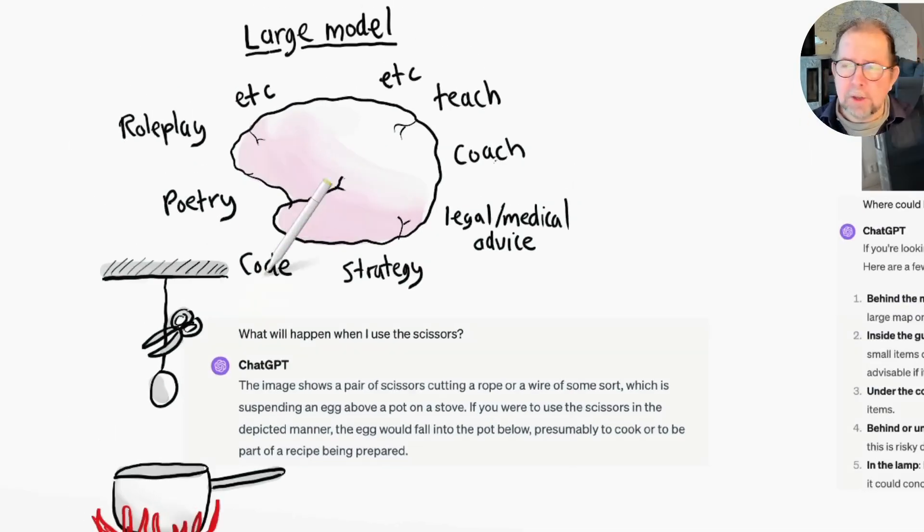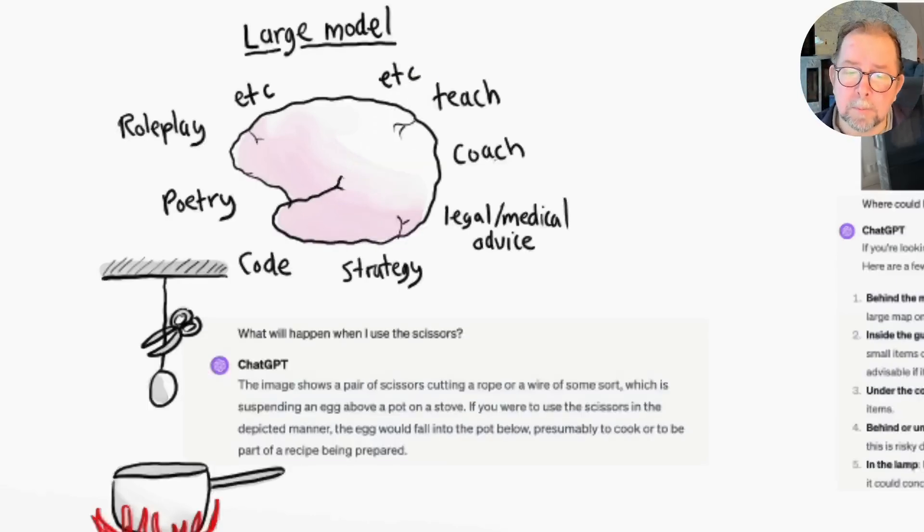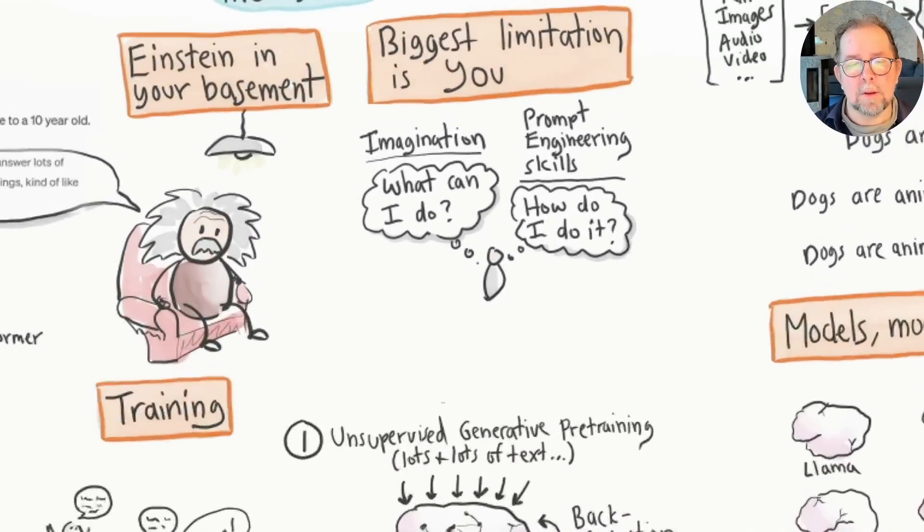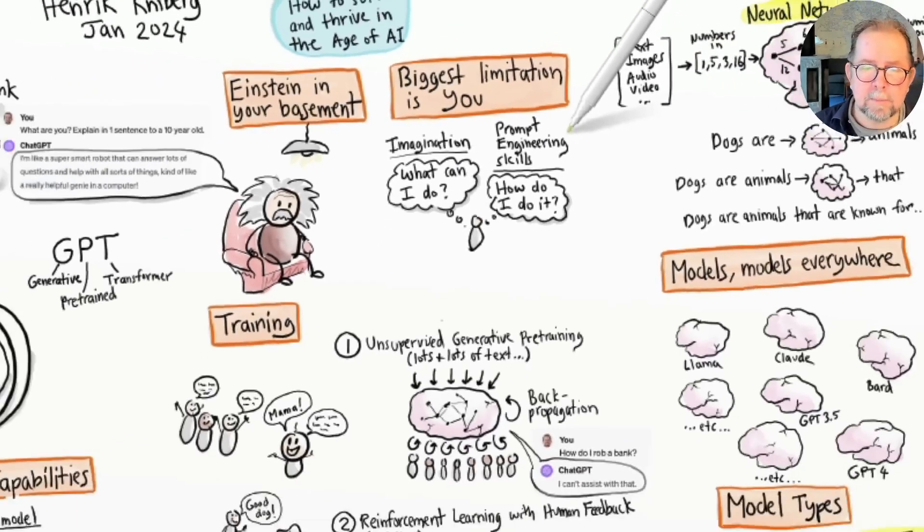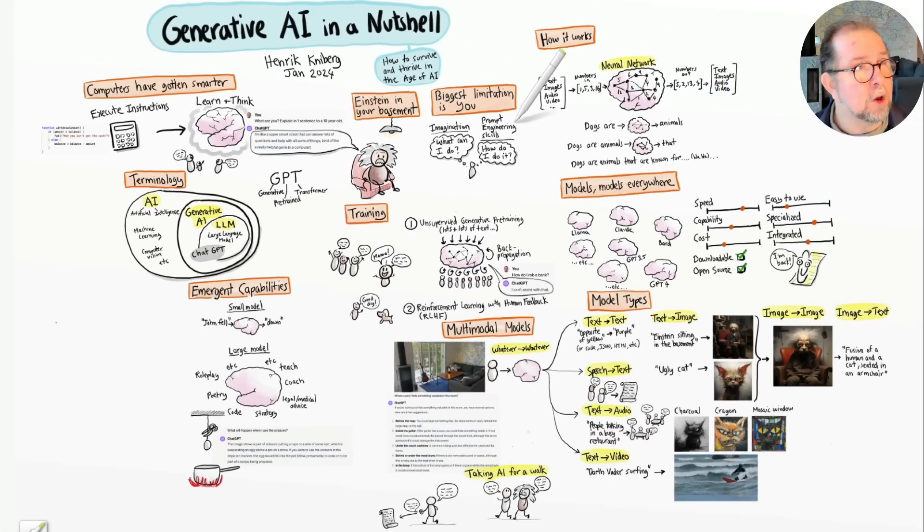When GPT-4 was released, I started using it as a coding assistant and I was blown away. When prompted effectively, it was a better programmer than anyone I've worked with. Same with article writing, product design, workshop planning, and just about anything I used it for. The main bottleneck was my prompt engineering skills. So I decided to make a career shift and focus entirely on learning and teaching how to make this technology useful - hence this video.